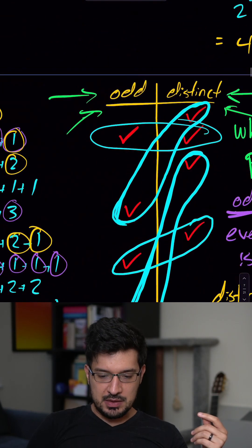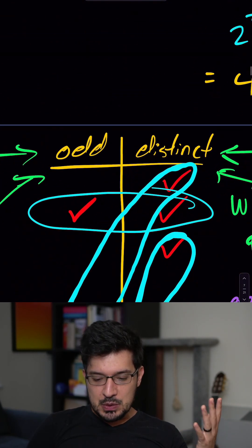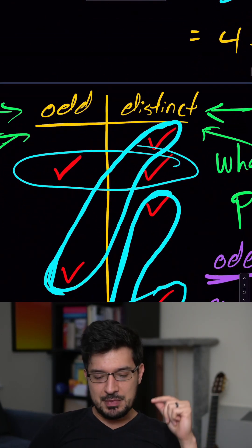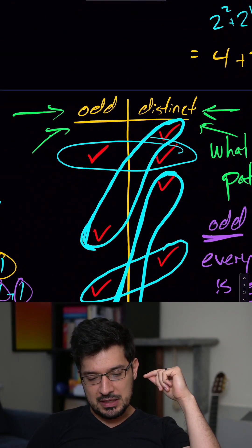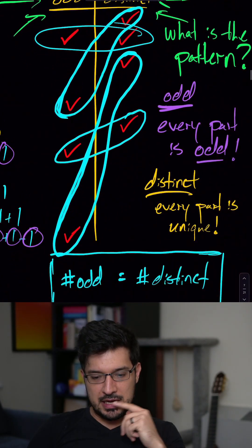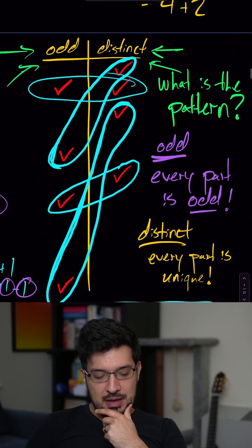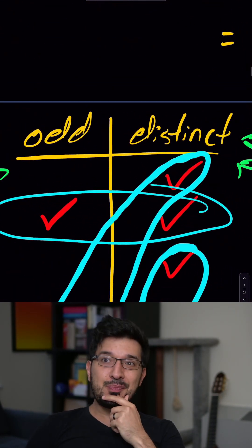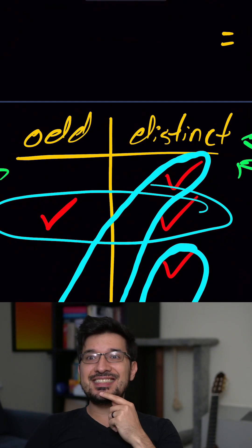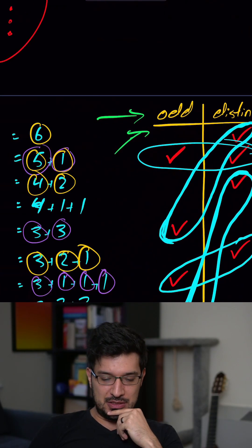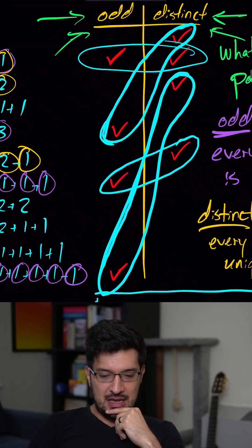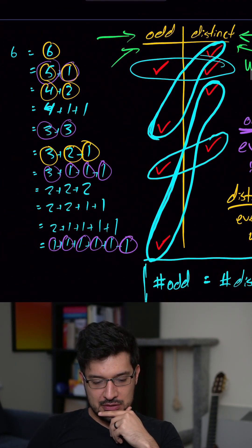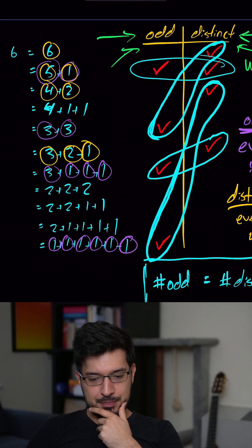Now here's the big, beautiful piece of mathematics that we worked on and I tried to explain. We're going to define two ideas: an odd partition and a distinct partition. Pause the video and see if you can try to figure out the pattern.